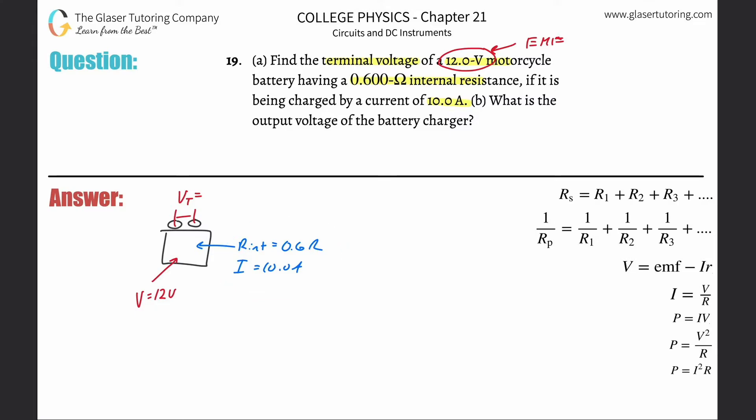What I can then do is use the internal resistance combined with the current to find the internal voltage lost essentially. So the voltage internally lost is going to be equal to IR. Current is 10, internal resistance is 0.6, so the voltage internally that is lost to overcome that internal resistance is going to be 6 volts.